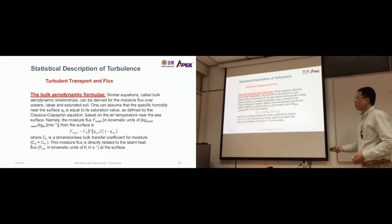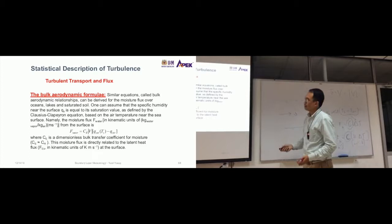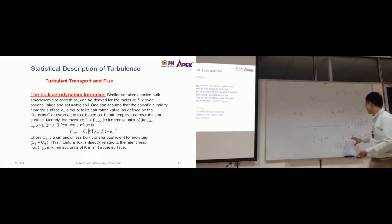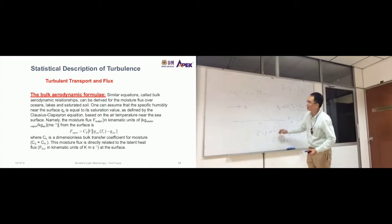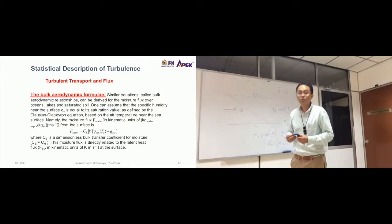So where CE is a dimensionless bulk transfer coefficient for moisture. And you notice that, okay, there's one more thing that I forgot to mention. We have C here that changes the unit from here to here. But there is another constant attached to this. There's another one—CH. So this is special for each parameter. So this for heat transfer, it's CH. For moisture, it's CE.